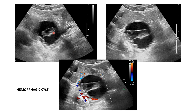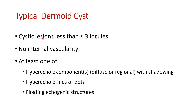A retractile clot is an atypically shaped structure inside the cystic component without vascularity. A typical dermoid cyst has less than three locules with no vascularity and should contain at least one of these: hyperechoic components with shadowing, or hyperechoic lines or dots, and floating echogenic structures inside the cyst.